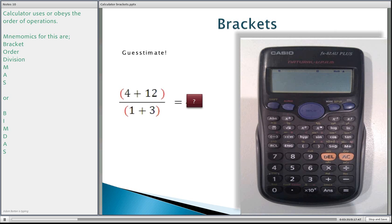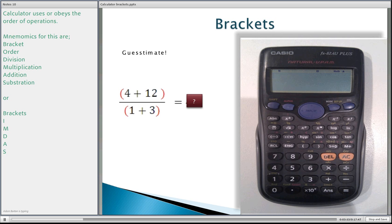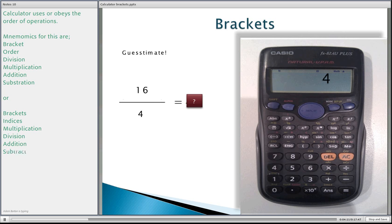Before we type this into our calculator, let's guesstimate approximately what value we should get. So 4 plus 12 gives you 16, and 1 plus 3 gives you 4. Replacing the top with 16 and the bottom with 4, we know that 4 goes into 16 four times — so our answer should be 4. But we saw 19 before. The calculator is only working out what you've put in, so let's show you why we need the brackets.